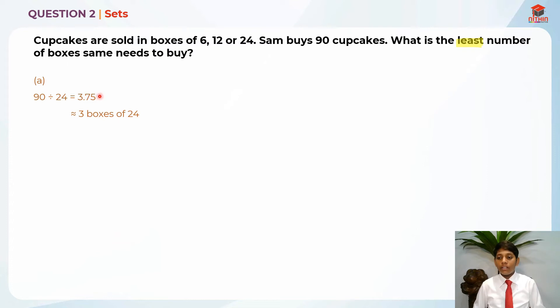Now we need to find how many cupcakes are in these 3 boxes. We just take 24 times 3 because there are 3 boxes of 24, which gives us 72.